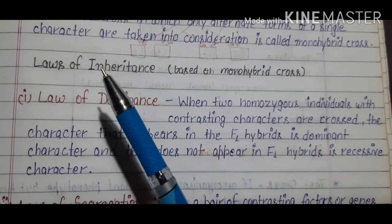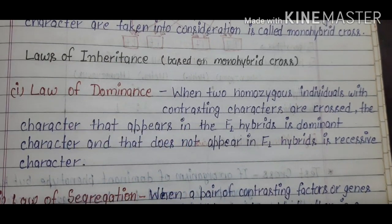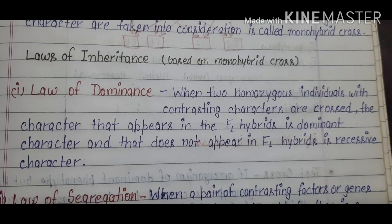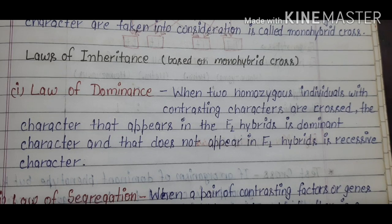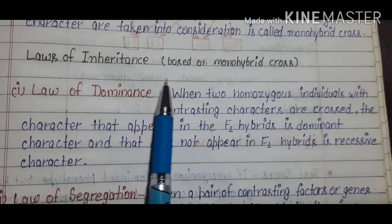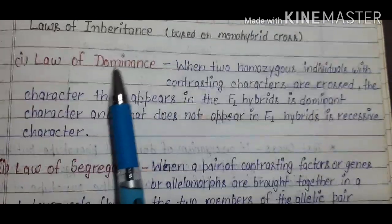By performing monohybrid crosses, Mendel derived certain laws. He performed experiments with different characteristics and obtained the same observations each time. Based on these observations, he gave laws known as the Laws of Inheritance based on monohybrid cross. Two types of laws were obtained: the first is the Law of Dominance.